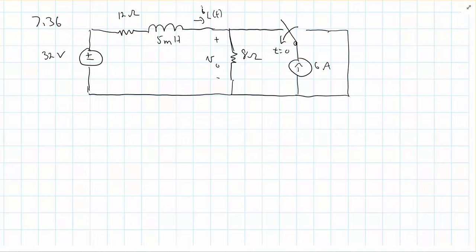So what we need to think about first off is what the initial condition is for the current here. Initially, before that switch moves, we have the following.